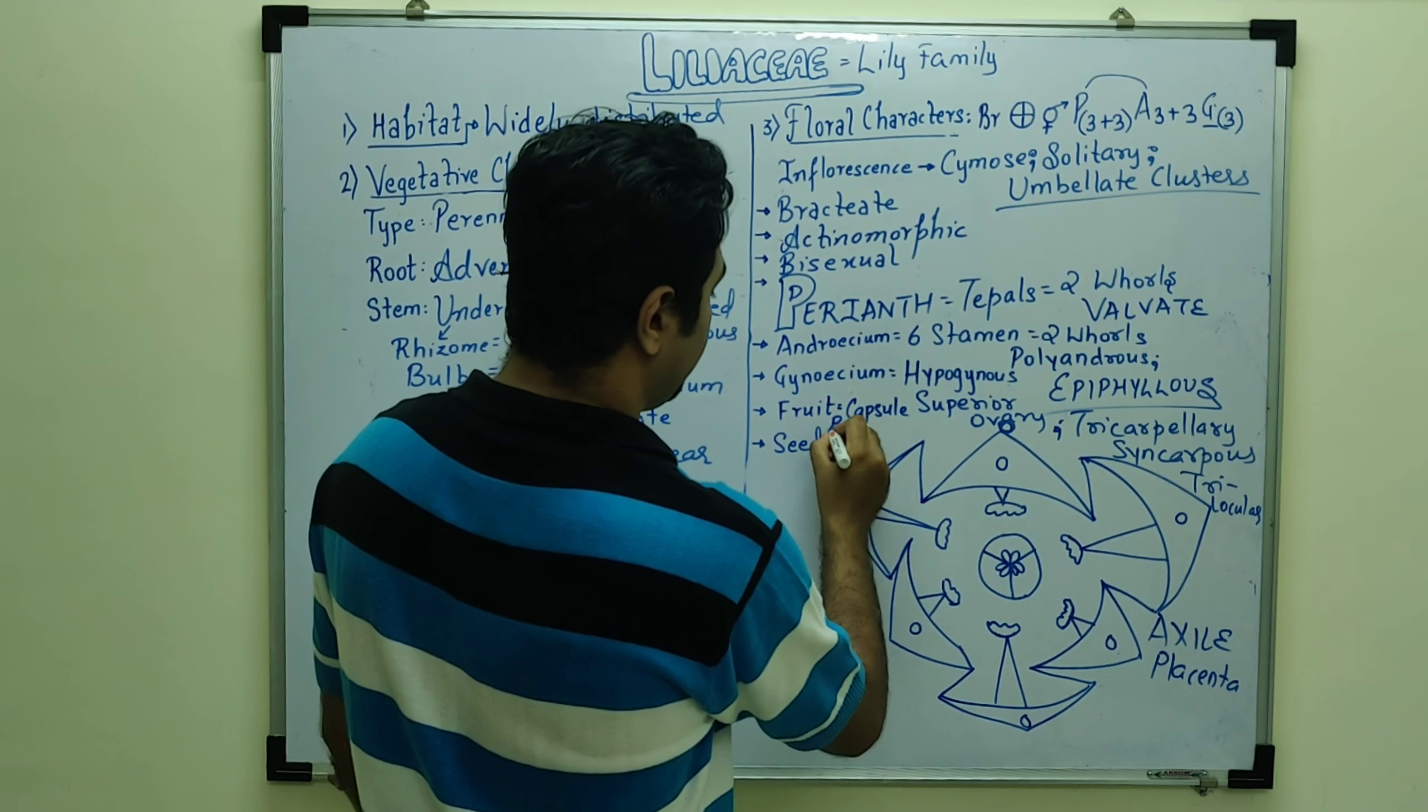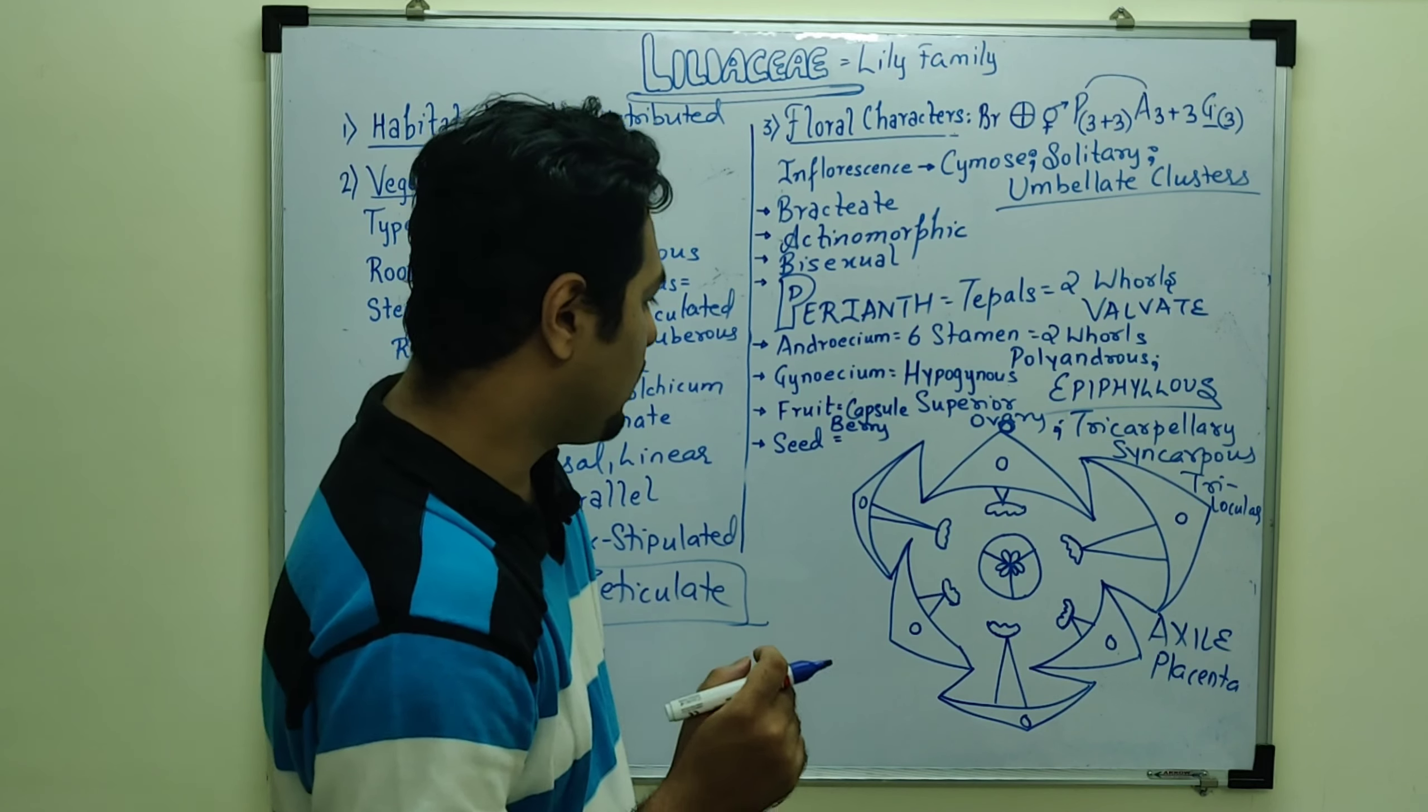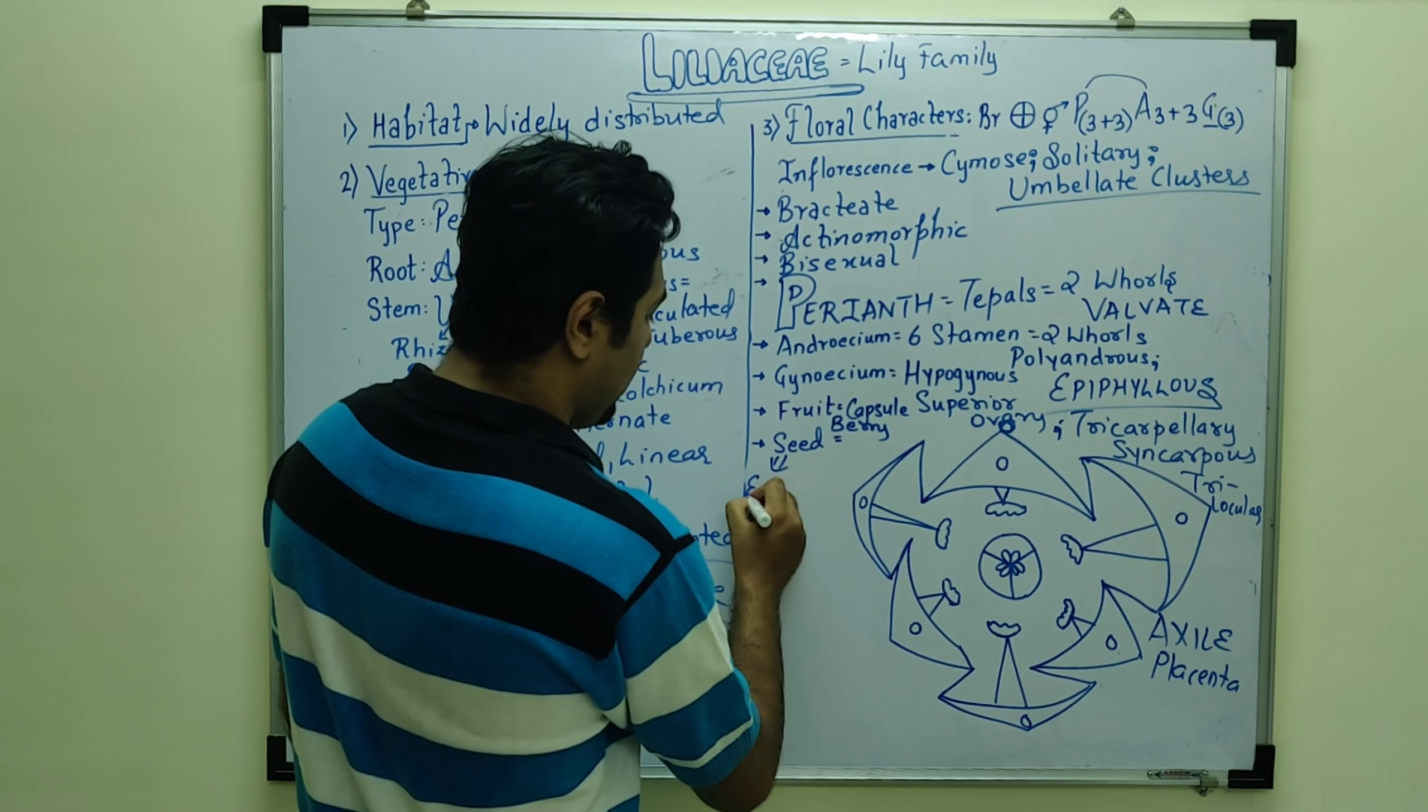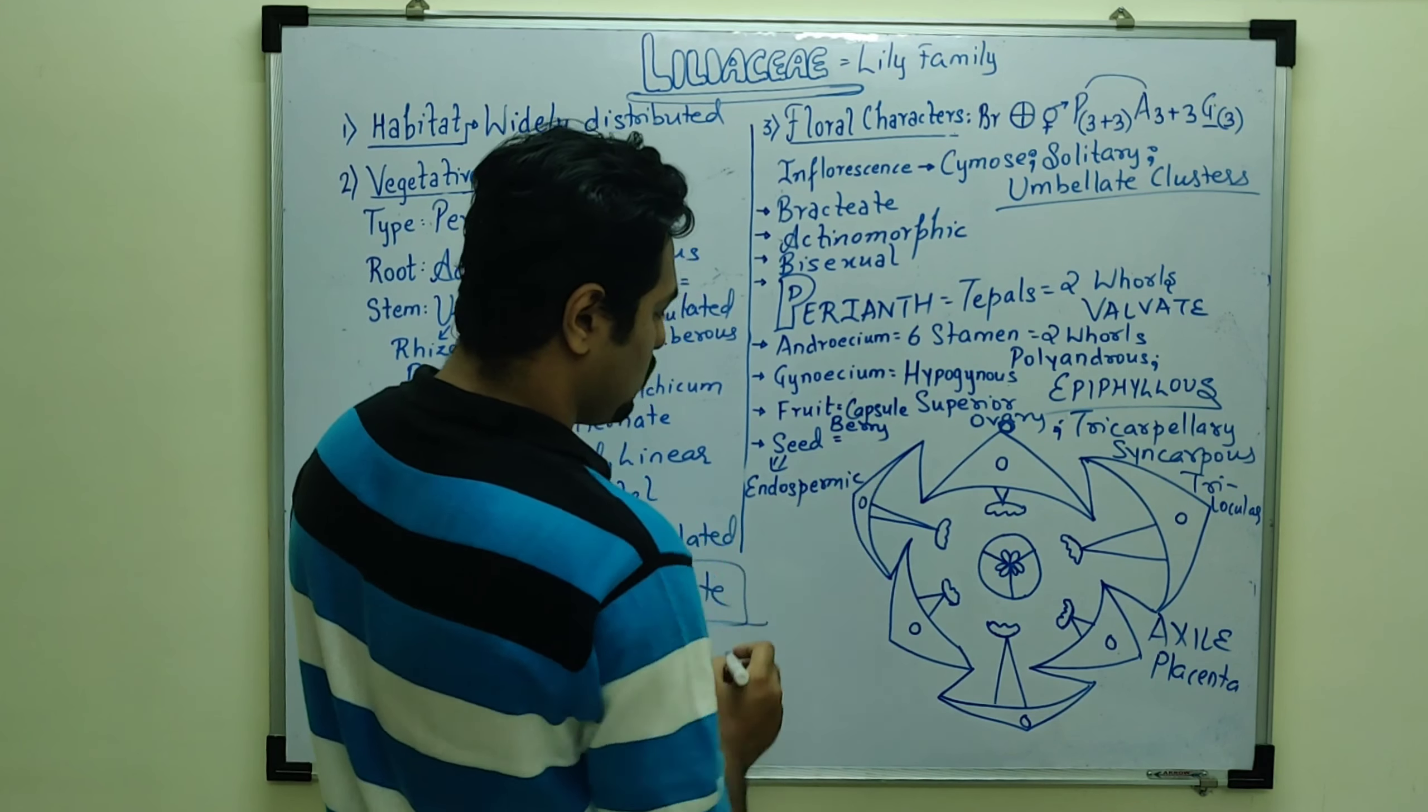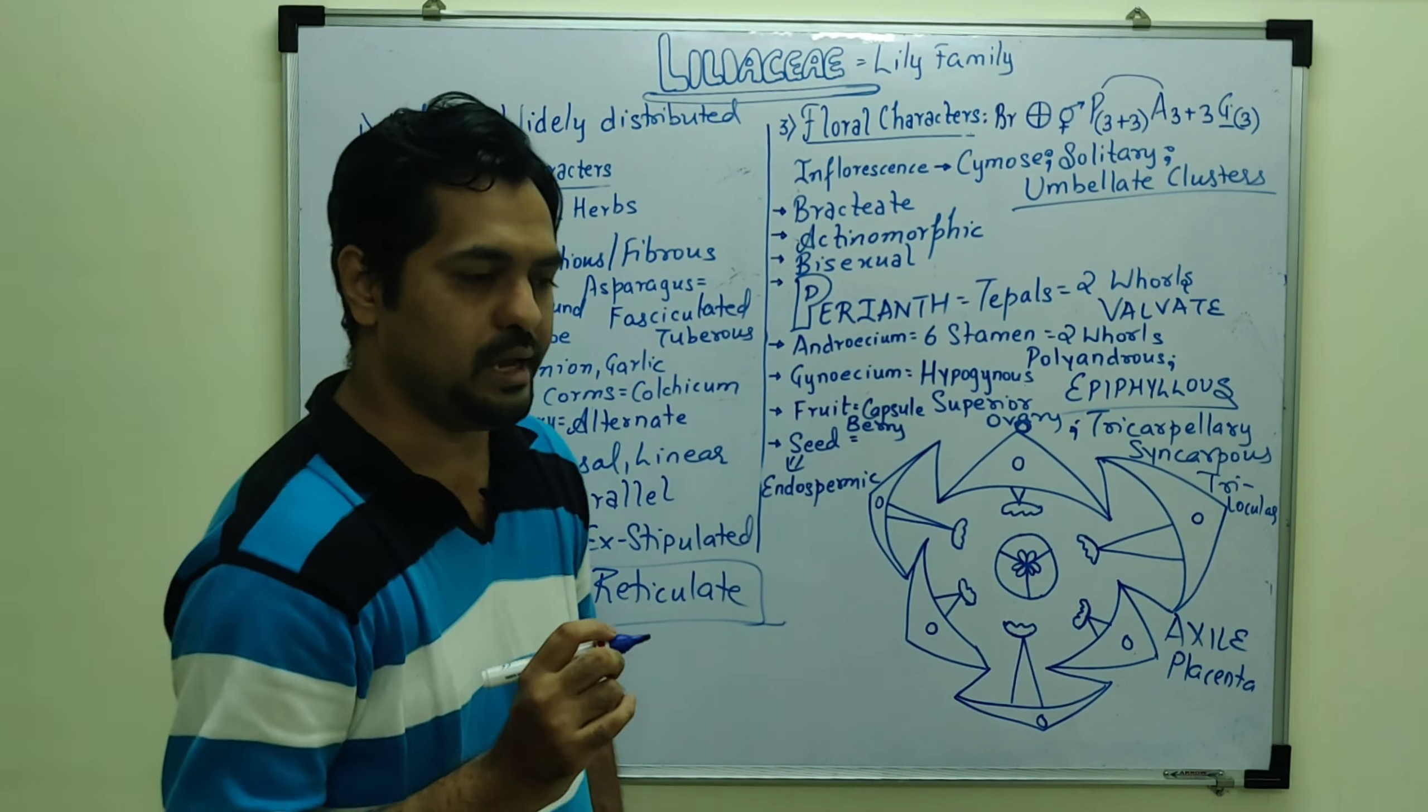Fruit, which we observe here, fruits are mainly in the form of capsule, capsule or berry. Berry presence. Seeds, these seeds are endospermic seeds. Endosperm presence.